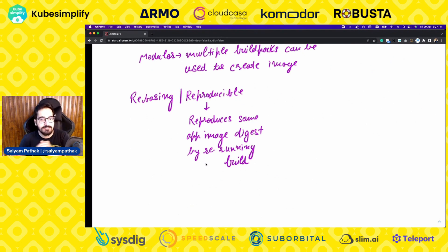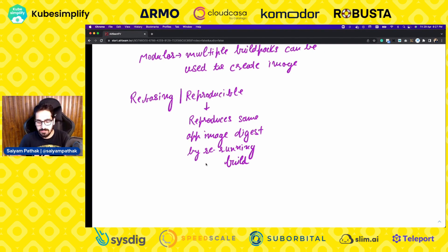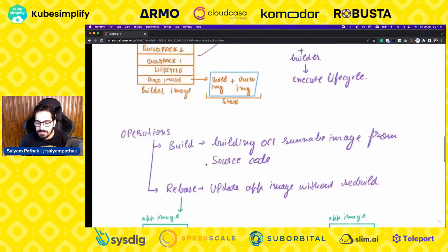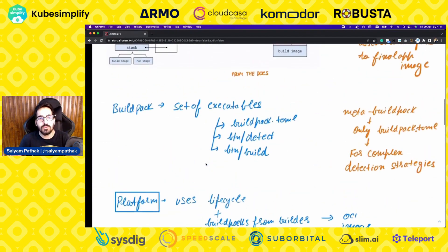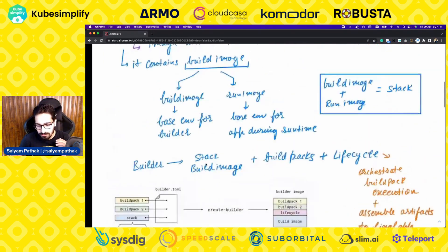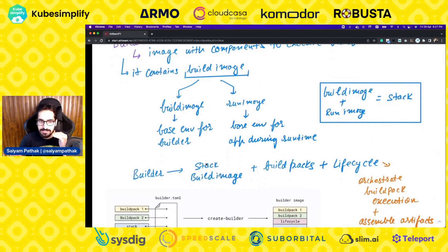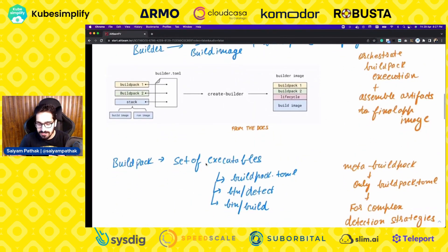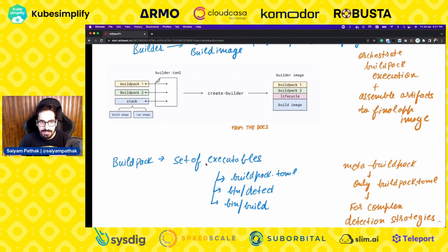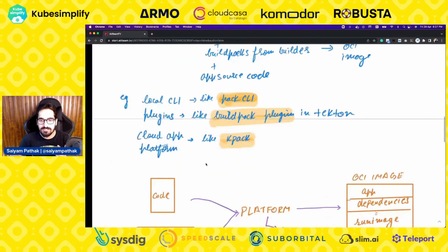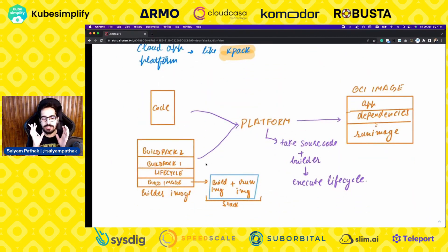Builds are also reproducible — the same app image digest is produced when you rebuild without changes. Overall, Buildpacks help you create an OCI image from source code without writing a Dockerfile. Key concepts: detect phase and build phase; builder consisting of Buildpacks and stacks; and the platform integrating everything for the user experience.